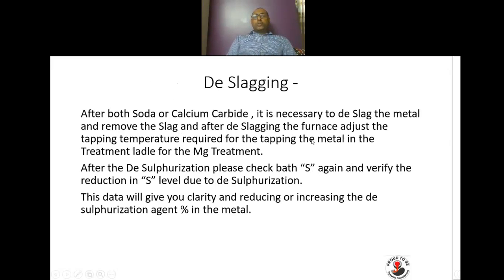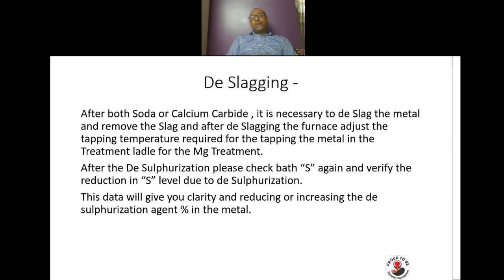After both soda ash and calcium carbide treatment, it is necessary to de-slag the metal and remove the slag from the furnace. After de-slagging, adjust the tapping temperature required for tapping the metal and then go for magnesium treatment. After desulphurization, check the bath sulfur again to verify the reduction in sulfur level. This data gives clarity on the percentage reduction in sulfur, allowing you to adjust the desulphurization agent quantity to reduce costs.